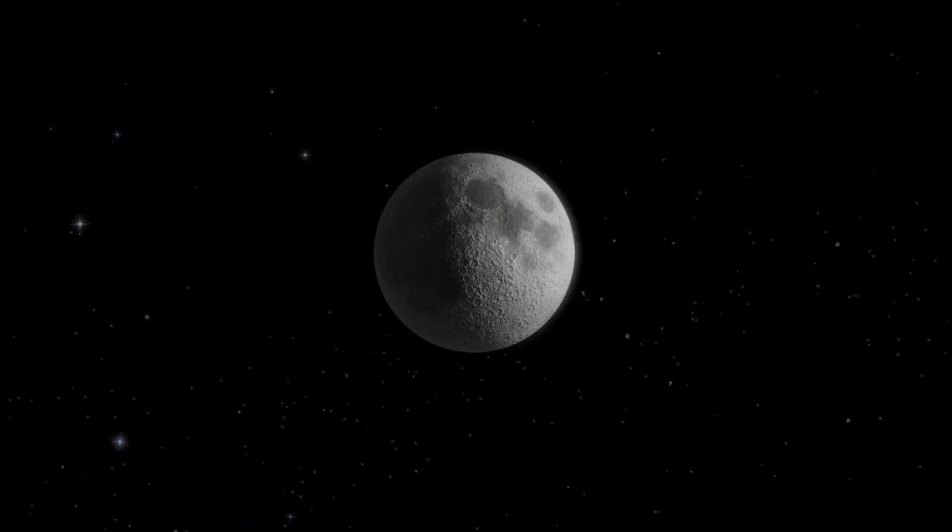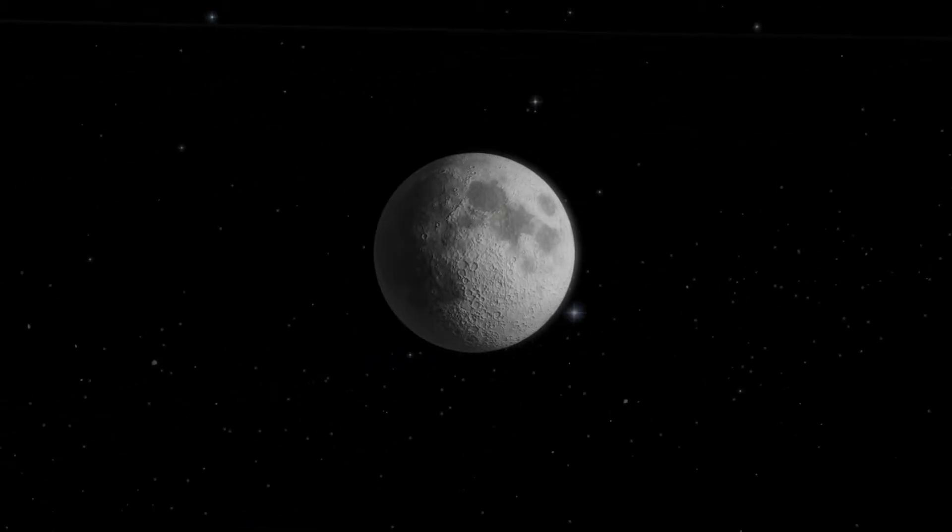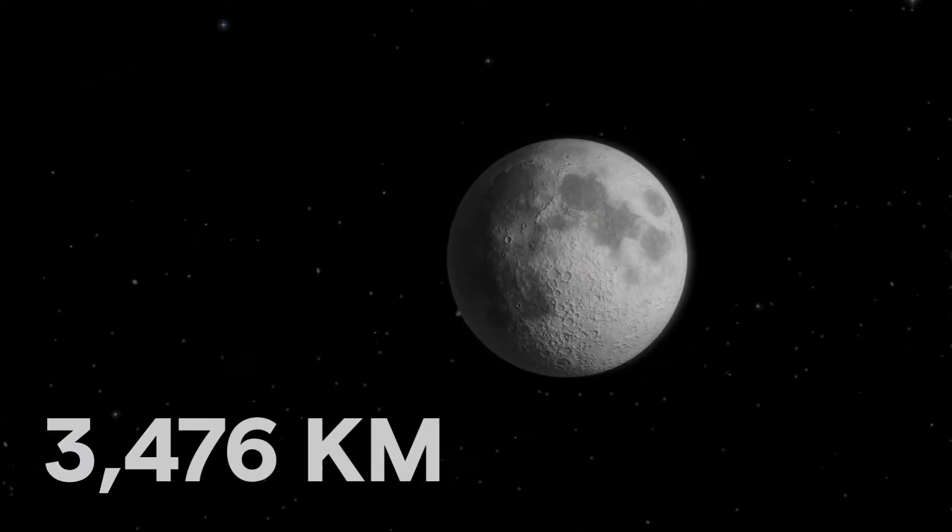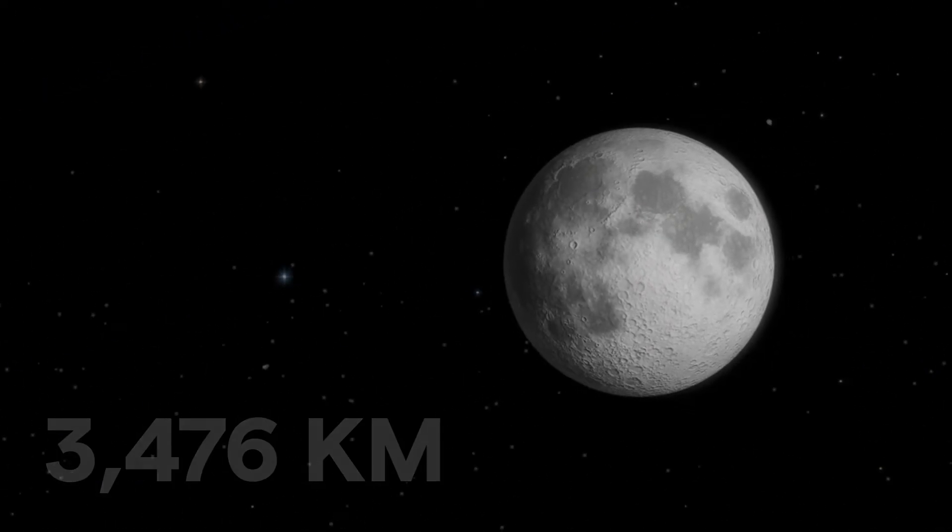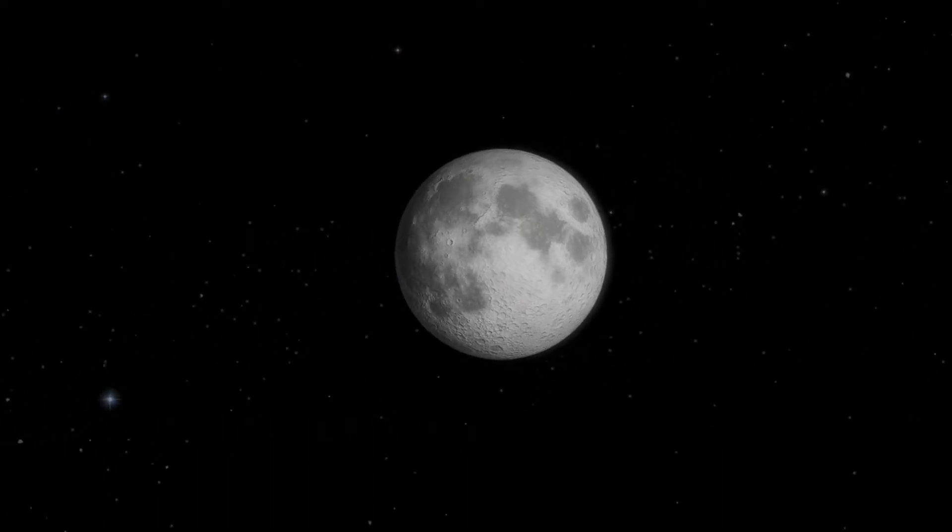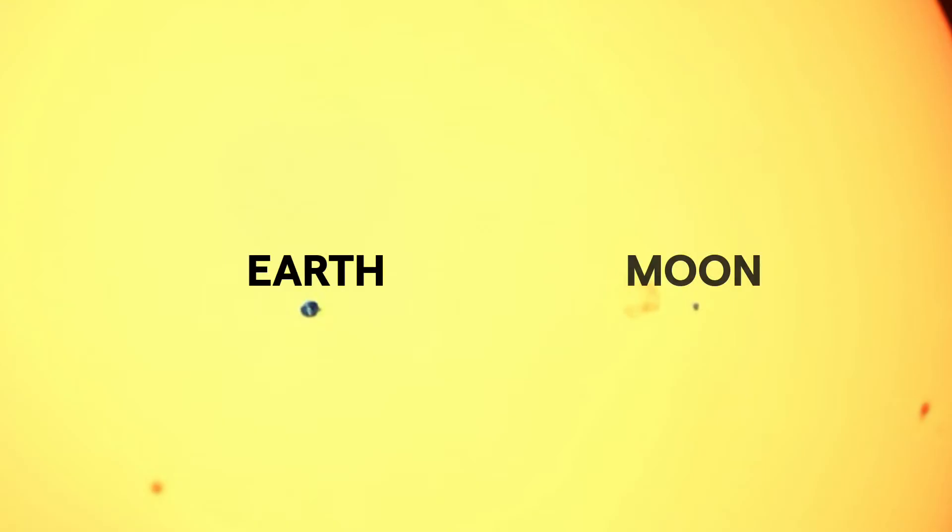And what about the Moon, Earth's only natural satellite? Well, the Moon's diameter is only 3,476 kilometers, or less than one four-hundredth the size of the Sun. Here's what those sizes look like in comparison to one another.